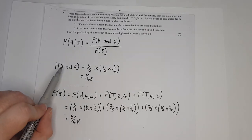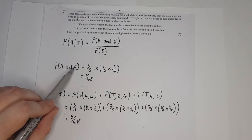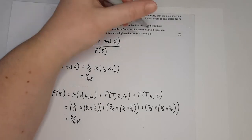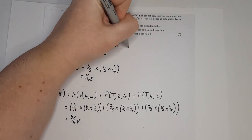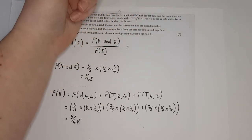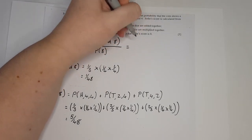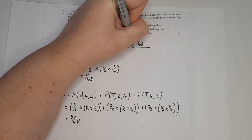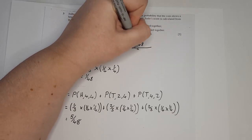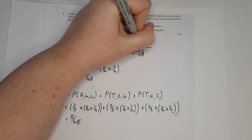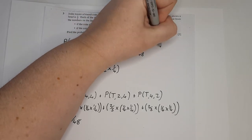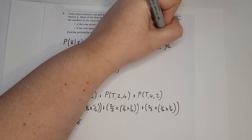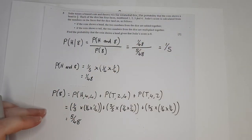So now I have P(head ∩ score=8) = 1/48 and P(score=8) = 5/48. Putting it into the equation: 1/48 divided by 5/48 gives a final answer of 1/5.